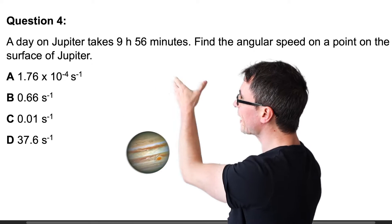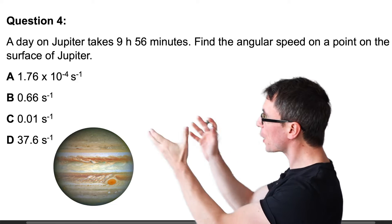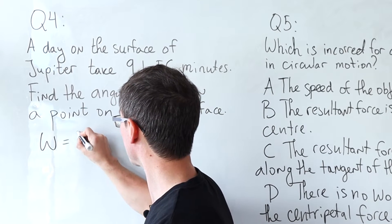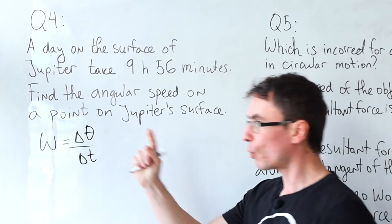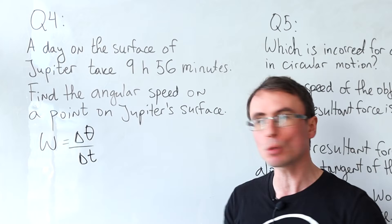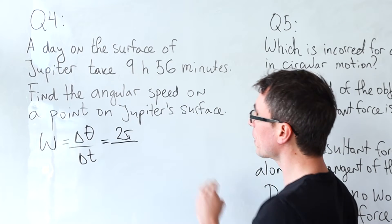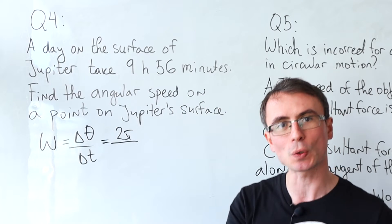Question four: a day on the surface of Jupiter takes 9 hours and 56 minutes. Find the angular speed on a point on the surface. The angular speed is just equal to the angular displacement divided by the time. Now a full rotation is 2π radians so this will be 2π divided by the time period which is 9 hours and 56 minutes that will need to convert to seconds.